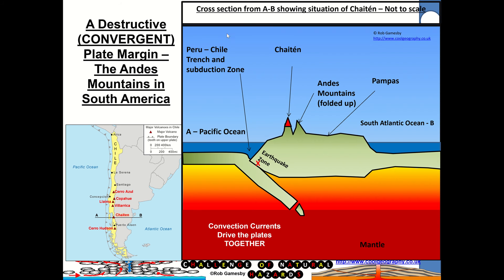So here you've got a destructive or convergent margin, and down here you can see there's a slice through South America showing you the general line of this cross section from the Pacific Ocean across to the South Atlantic. So here we've got the convection currents in the mantle, they're driving the plates together. So South America's being driven westwards, and the Nazca plate across here is being driven eastwards.